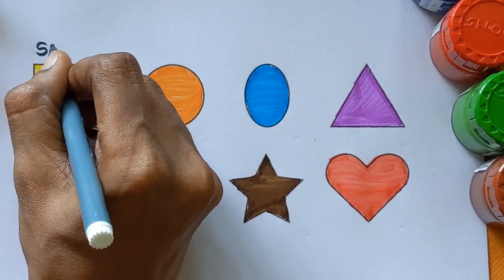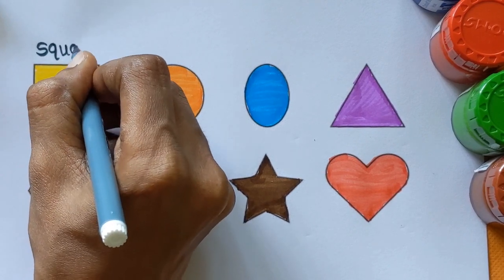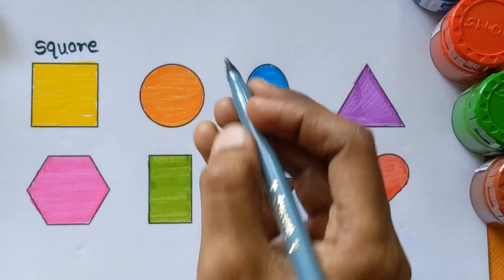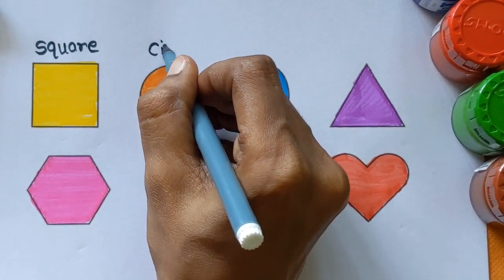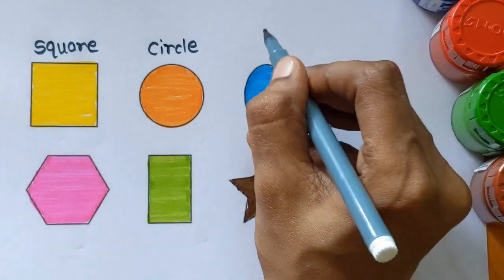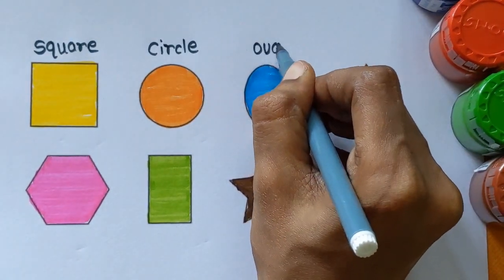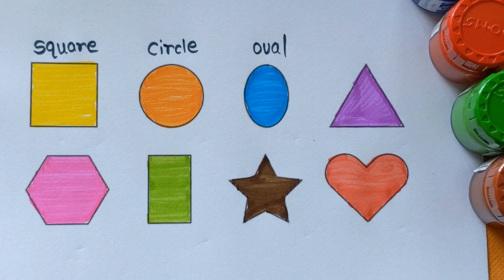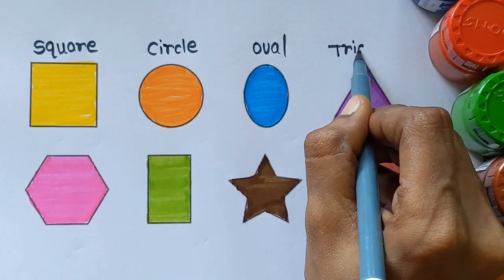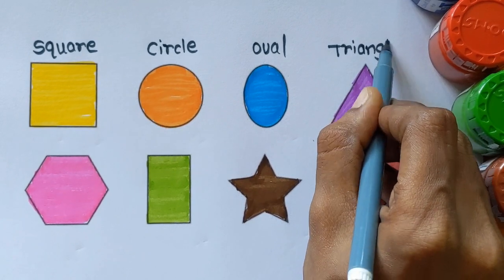This is square with yellow color. Circle with an orange color. Oval with a sky blue color. This is triangle with a purple color.